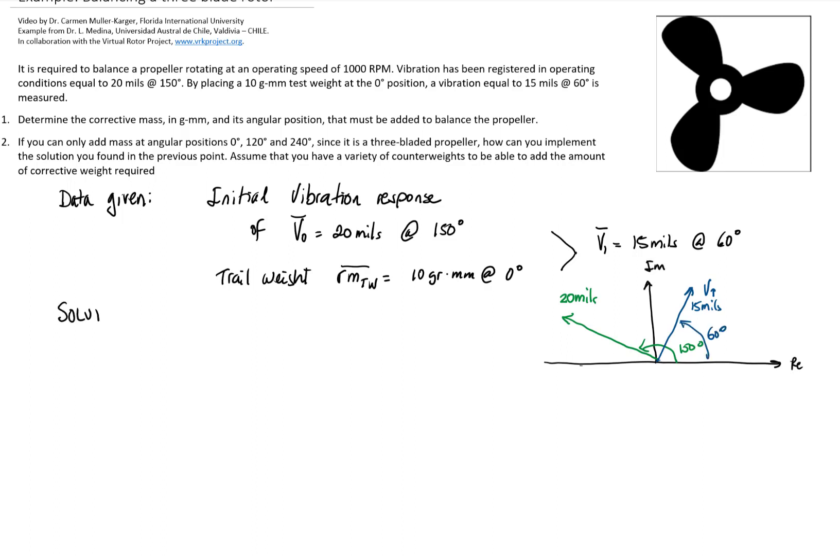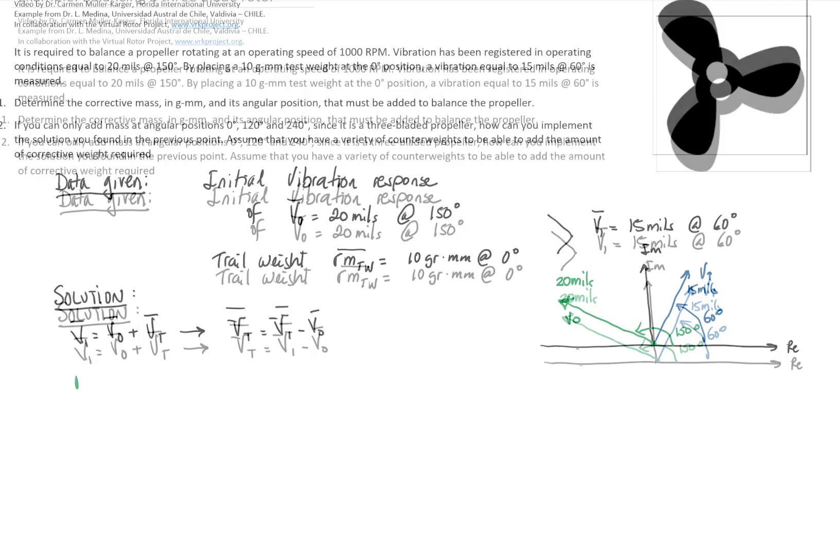For our solution, we know that the second run is the initial run and the effect of the trail weight. I'm going to subtract the second run minus the initial run to get the effect of the trail weight. To do so, I'm going to decompose the vectors in real and imaginary parts.